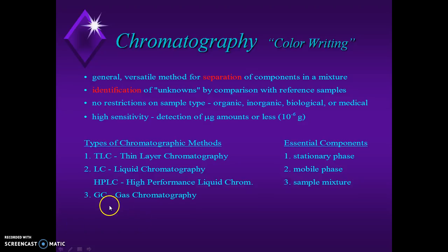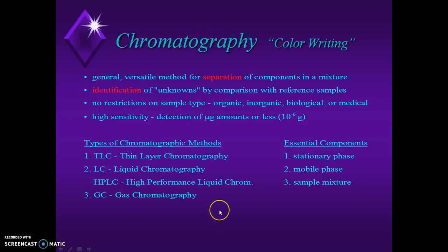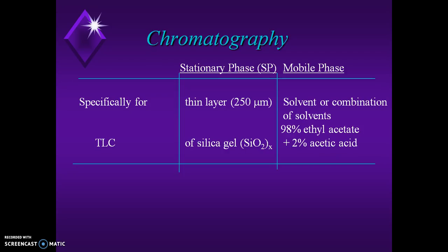Thin layer chromatography is a planar chromatography, whereas liquid chromatography and gas chromatography are examples of column chromatography. To perform any chromatographic method, you require three essential components: first is the stationary phase, which is stable; second is the mobile phase, which passes through the stationary phase; and third is the sample mixture, which must be dissolved in a suitable solvent.